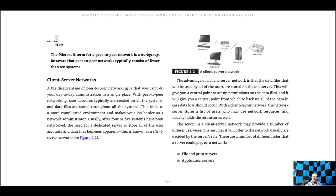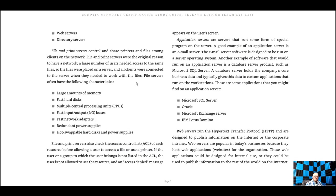The advantages of client-server: data files are all stored on one server, so you can run backups on just that one machine instead of a whole bunch. The network server stores a list of users who may use the network resources and holds those resources as well. You'd have an account with permissions based on your job title, which would determine what you could access. There are many types of servers: file and print servers, application servers, web servers, directory servers, and so forth.